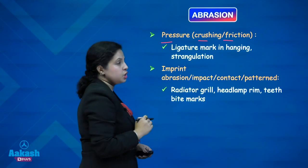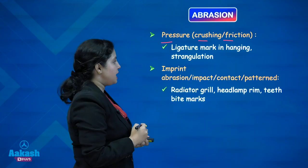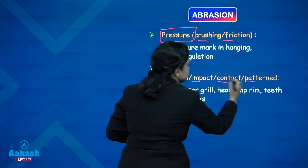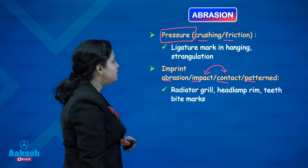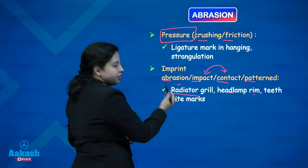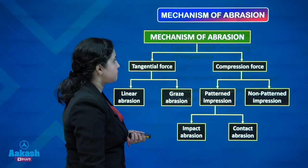A pressure abrasion, or crushing friction force abrasion, is generally found in cases of ligature marks in hanging or strangulation, where there is pressure or crushing of the underlying tissues. Imprint abrasion, also known as impact abrasion, contact, or patent abrasion, is caused by a patterned rough object like a radiator grill, a headlamp rim, or teeth and bite marks.